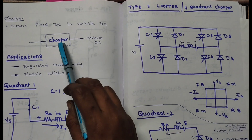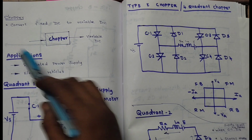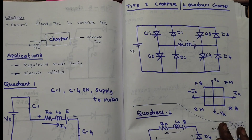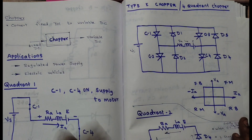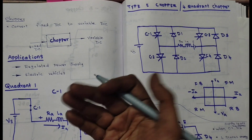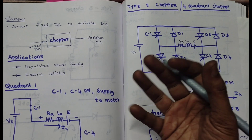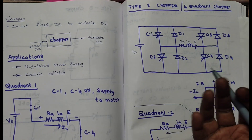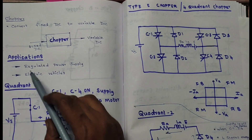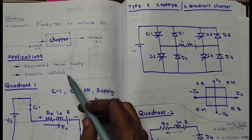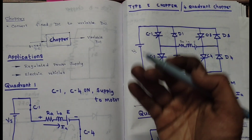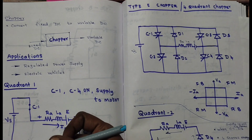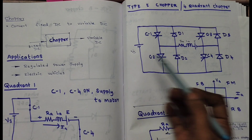A chopper is a circuit used to convert fixed DC to variable DC. For example, in the regulated power supply (RPS) used in your power electronics lab, you convert fixed DC to variable DC from 0 to 30V or 0 to 15V. Also, in electric vehicles, if you want to change the speed you need a chopper to vary the DC voltage. Now we are going to see the first quadrant operation of the chopper circuit.